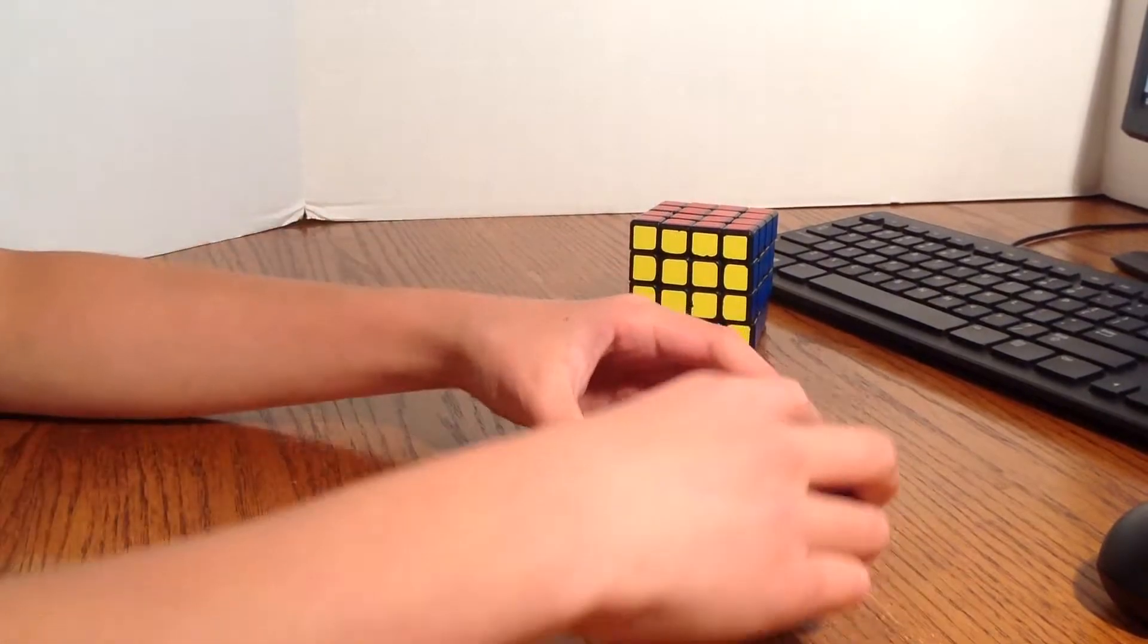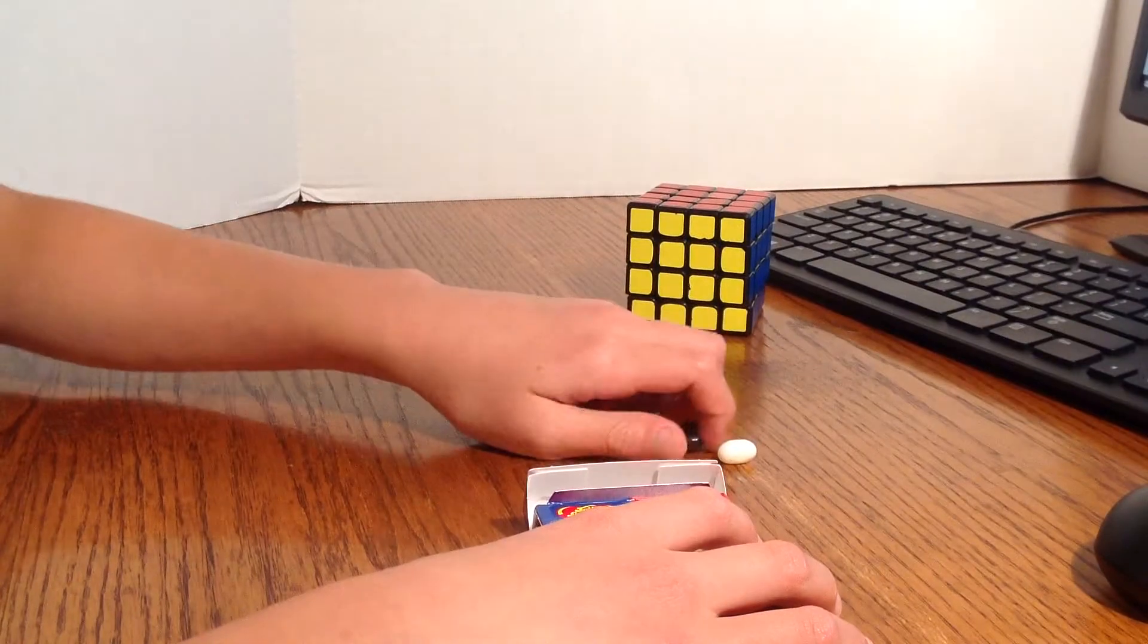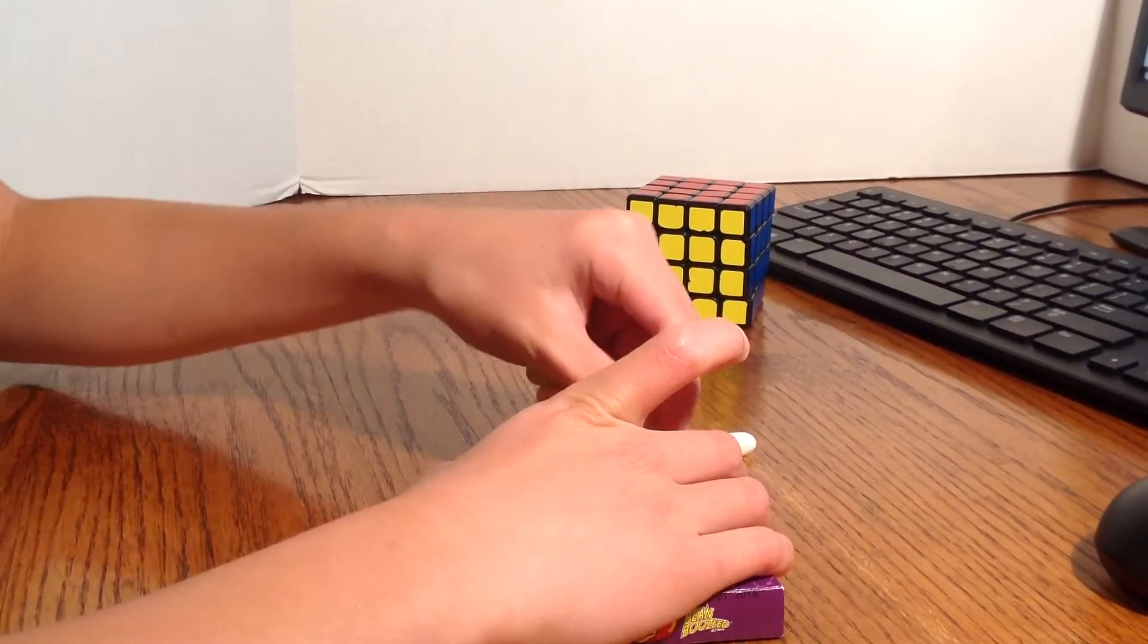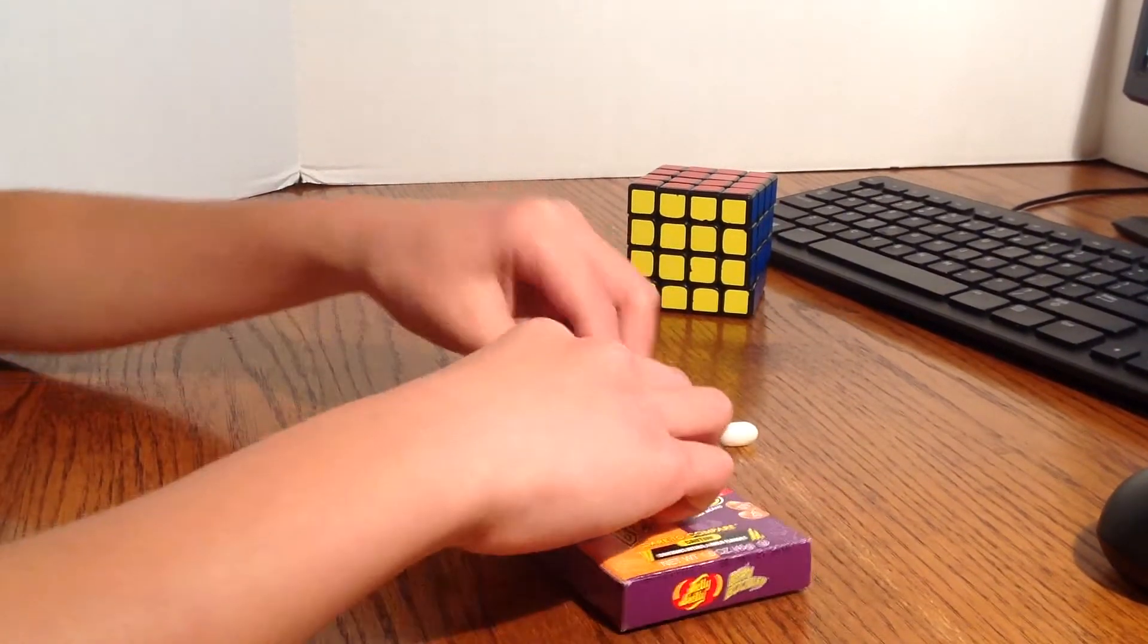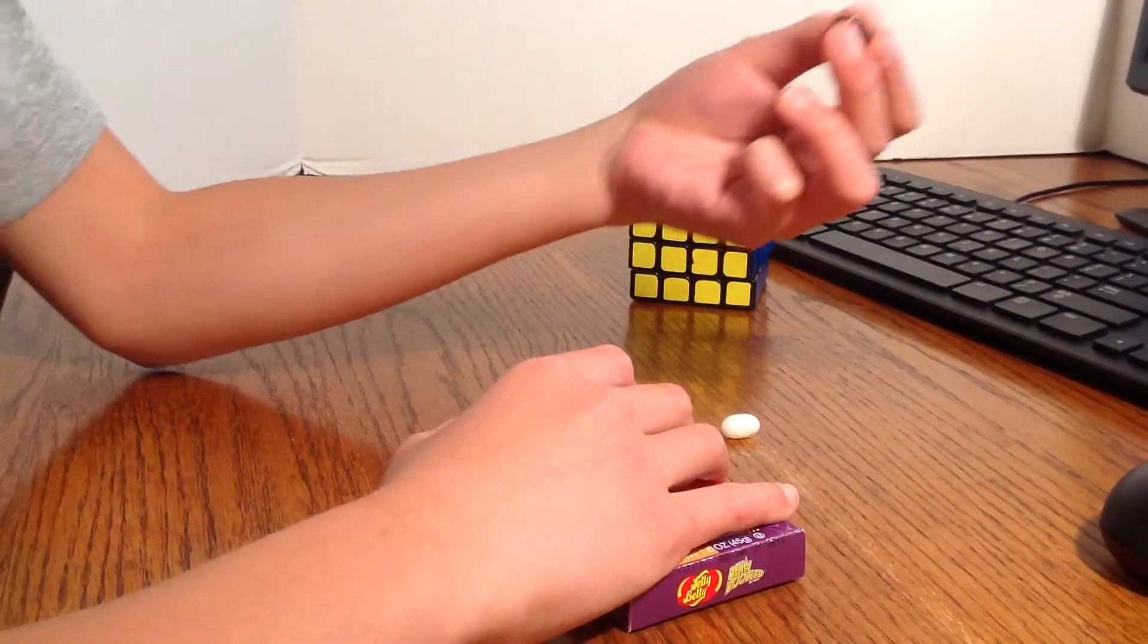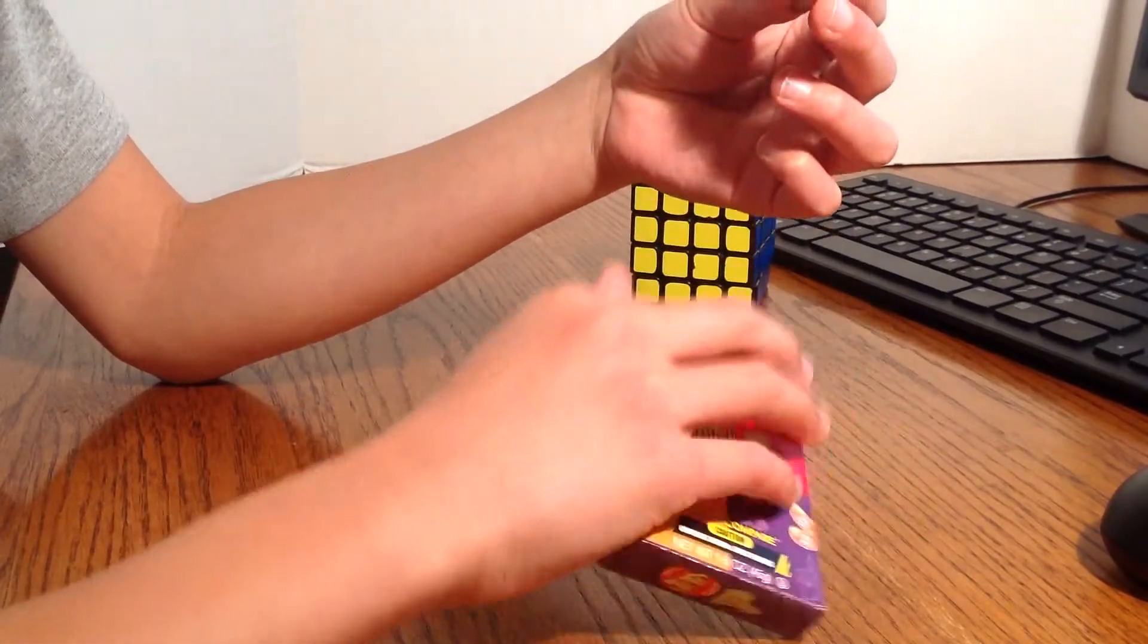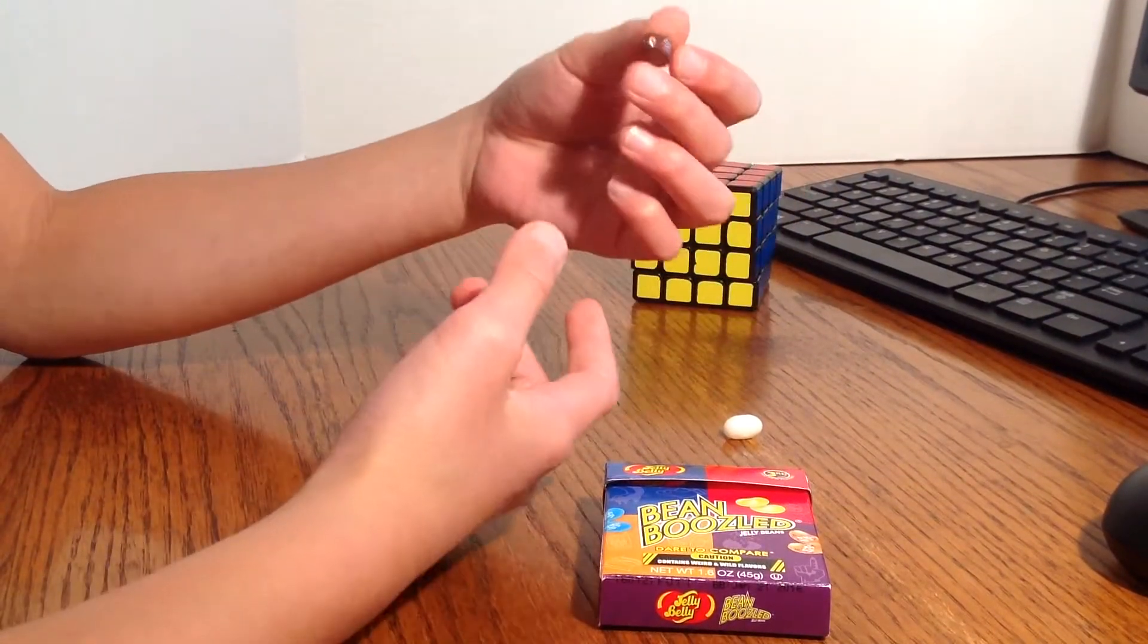Alright now so I'm just going to pick out a random one. This is like a mess. I'm going to start out with this brown one. Hopefully it's chocolate pudding. In part one I got chocolate pudding. So this one's probably canned dog food. But I'll just give it a try.